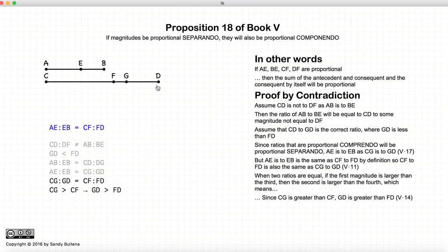Let me just restate that because I stumbled a bit. If these two ratios are equal, that means that if CG is greater than CF, which it is in this case, that would imply that GD would be greater than FD.